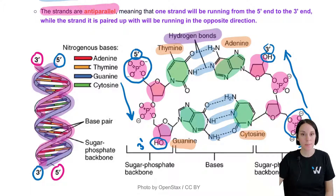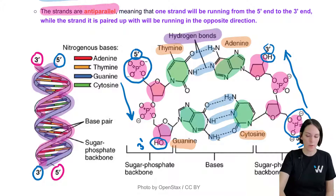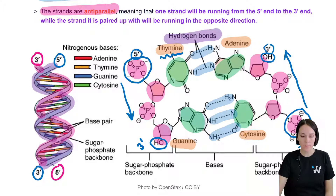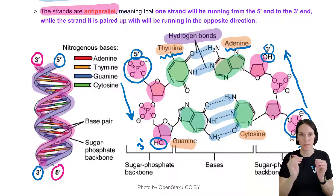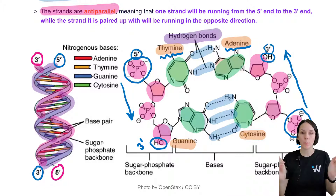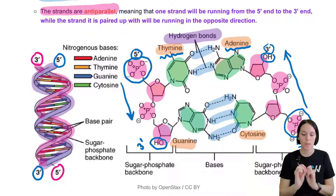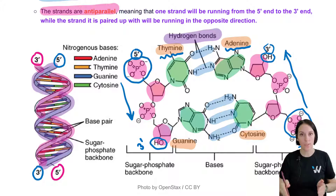You'll also notice that you always have a purine paired to a pyrimidine. Looking at adenine and thymine, thymine is the pyrimidine — bigger word, smaller molecule, just one ring — and adenine is the purine with its two-ring structure. This is important because you end up with the same size of base pair throughout. Two purines paired together would form a wider rung, and two pyrimidines would form a narrower rung. Having a purine paired with a pyrimidine gives the rungs of the ladder uniform size all the way down the double helix.